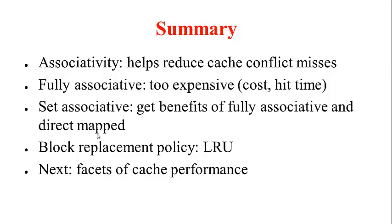To summarize, we have learned associativity as an idea to reduce cache conflict misses. The fully associative scheme, while effective in reducing conflict misses, is too expensive in hardware cost and increases hit time. Set associativity is a nice middle ground, getting the benefits of reduced conflict misses while keeping hit time low. We also saw that a block replacement algorithm is needed, and in practice the least recently used — LRU — algorithm, approximated by the clock algorithm, works well. Next, we will look at various facets of cache performance and how it can be improved.